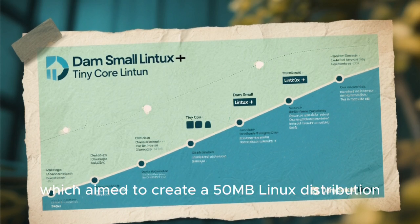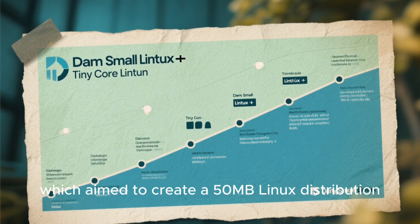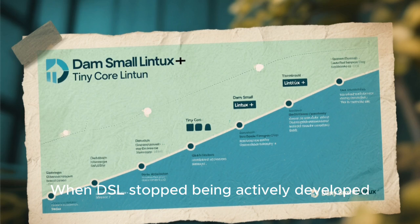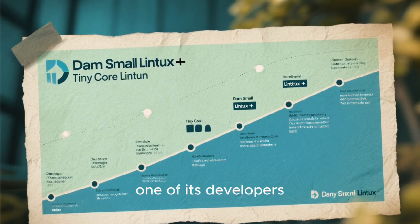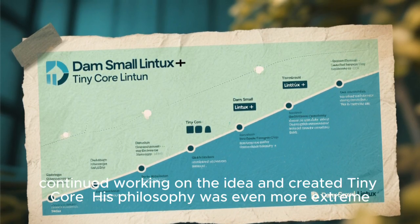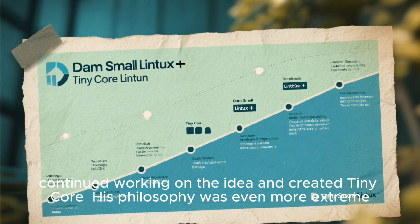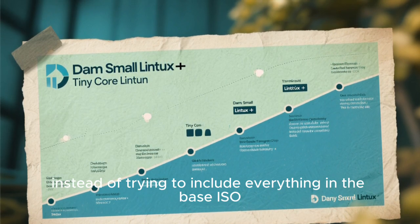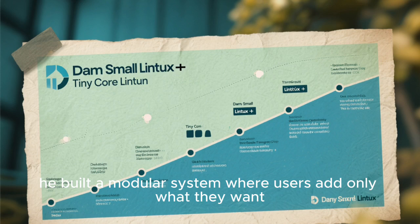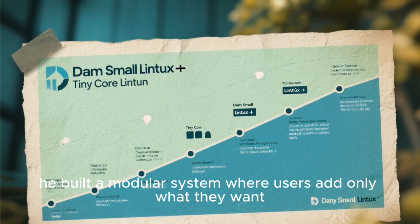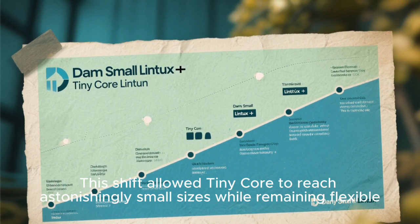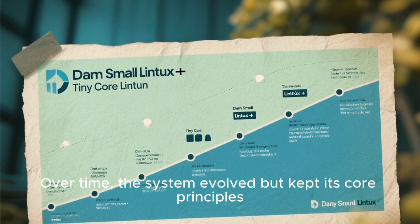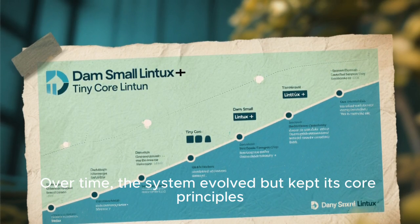The history of Tiny Core Linux is tied closely to the Damn Small Linux project, which aimed to create a 50 megabyte Linux distribution. When DSL stopped being actively developed, Robert Shingledecker, one of its developers, continued working on the idea and created Tiny Core. His philosophy was even more extreme — instead of trying to include everything in the base ISO, he built a modular system where users add only what they want. This shift allowed Tiny Core to reach astonishingly small sizes while remaining flexible, and over time the system evolved but kept its core principles.